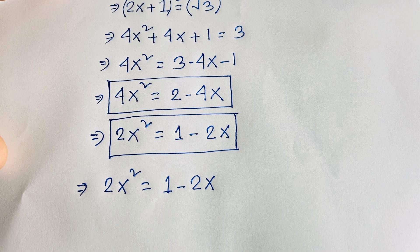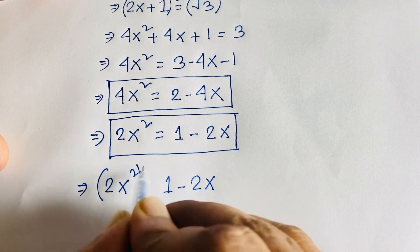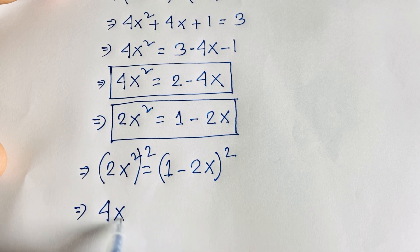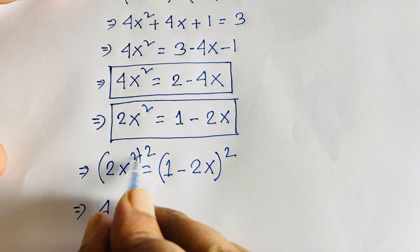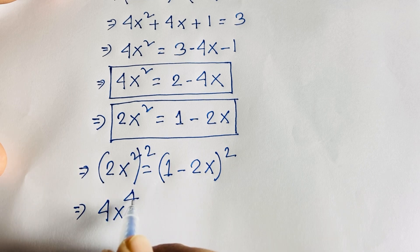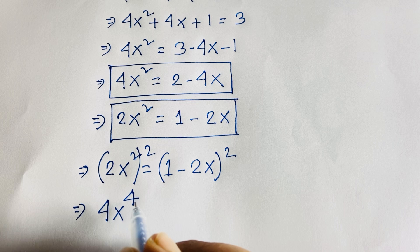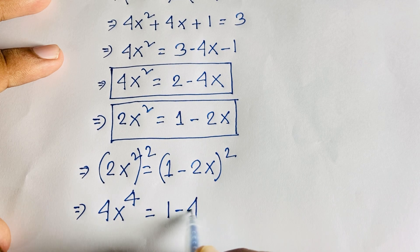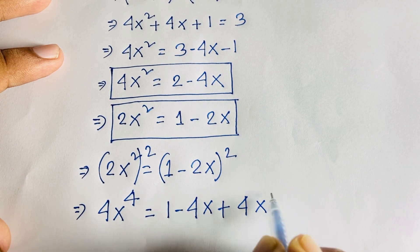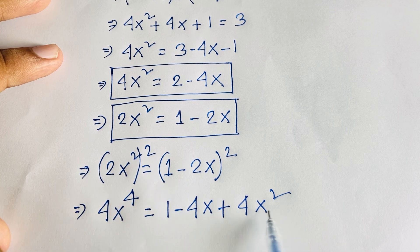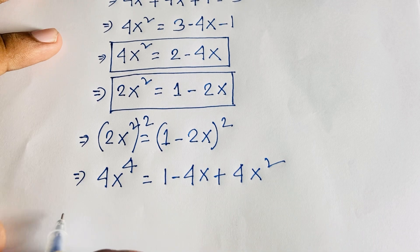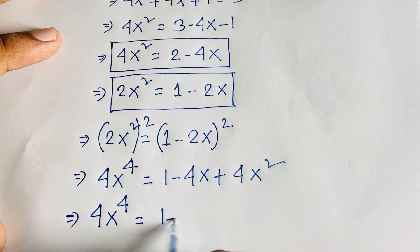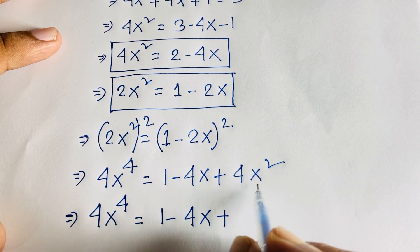Now I square both sides of the equation 2x² = 1 minus 2x. On the left, (2x²)² gives 4x⁴. On the right, using (a minus b)² = a² minus 2ab plus b², we get 1 minus 4x plus 4x².